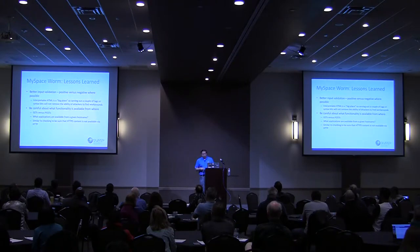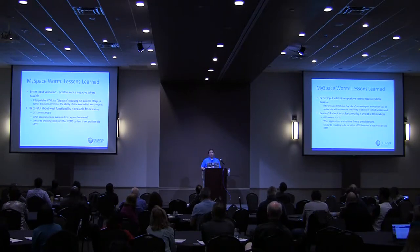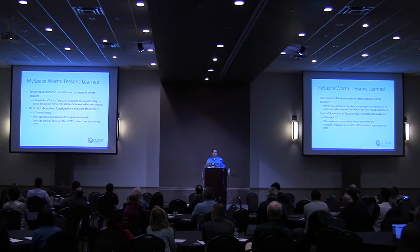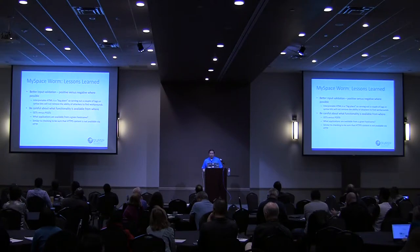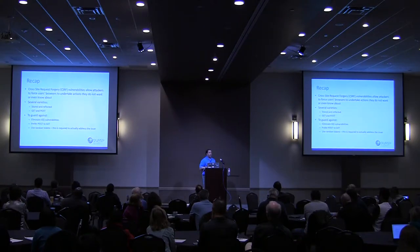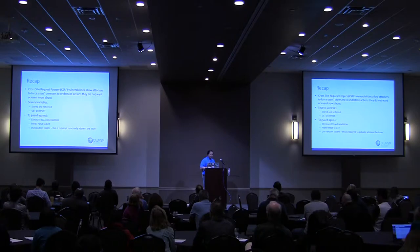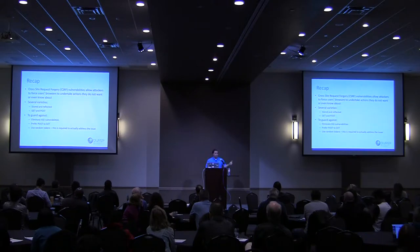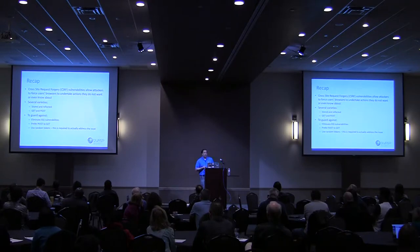Second: be careful about what functionality is available from where — prefer POST requests over GET requests. Not having the same application available from multiple hostnames. This is similar to making sure that HTTPS content is not available via plain HTTP. To recap: cross-site request forgery vulnerabilities allow attackers to force users' browsers to take actions they don't want performed. There are multiple varieties including stored and reflected, GET and POST. To guard against it, eliminate cross-site scripting vulnerabilities, prefer POST over GET, and really the only true way to eliminate it is to use nonces or random tokens.